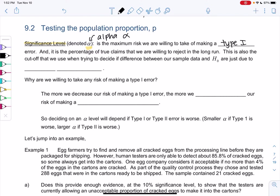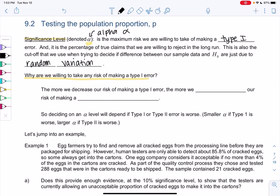This is also the cutoff that we will use when we are trying to decide if the difference between our sample data and H0 are just due to random variation. Why are we willing to make any type of type 1 error? Because the more we decrease our risk of type 1 error, the more we increase our risk of making a type 2 error. There's just bad samples sometimes.